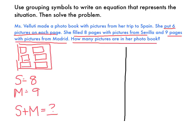So there's actually more than one way that I could do this. I know that there are 6 pictures on a page, and she has 8 pages for Sevilla with 6 pictures on a page. So that would be like 8 times 6, plus she can add the pages for Madrid, and that would be like 9 pages with 6 pictures on each page. That would be like 9 groups of 6. So one option is to do 8 times 6 plus 9 times 6. And this is an equation, so I do need to have an equal sign and a blank. So let's see what would happen if I solve that. I would solve what's in the parentheses first. So on the Sevilla pages, 8 times 6 is 48, plus 9 times 6 is 54.